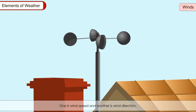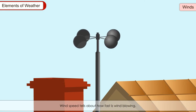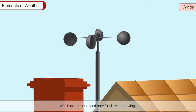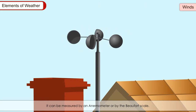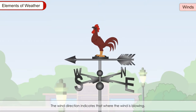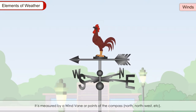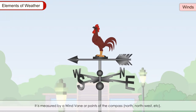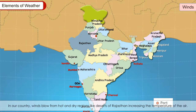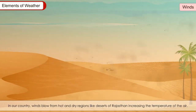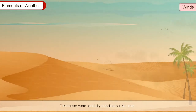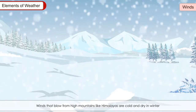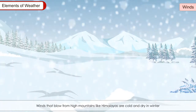Winds: There are two factors of wind which influence weather — wind speed and wind direction. Wind speed tells about how fast the wind is blowing; it can be measured by an anemometer or by the Beaufort scale. Wind direction indicates where the wind is blowing and is measured by a wind vane or the points of the compass. In our country, winds blow from hot and dry regions like the deserts of Rajasthan, increasing the temperature of the air and causing warm and dry conditions in summer. Winds that blow from high mountains like the Himalayas are cold and dry in nature.